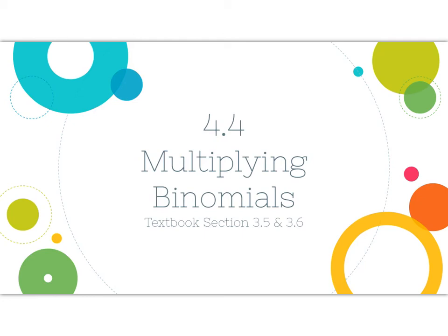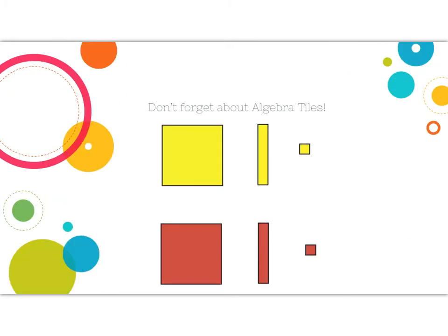We're going to take a look at multiplying binomials. This is a combination of two sections in your textbook because we're breaking it up a little bit differently. Sections 3.5 and 3.6 is where you'll see some of this information. Just a few little reminders — algebra tiles, in case you didn't go back and take a look at some of our grade nine review materials.